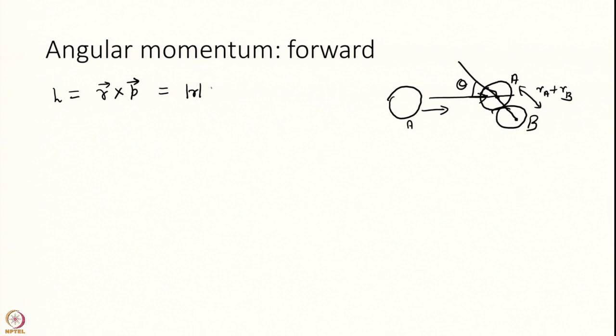This thing is nothing but magnitude of R magnitude of P into sine theta. Where theta is the angle between R and P and I am finding the angular momentum at the point of collision. R is RA plus RB. P is the reduced mass mu into U because U is the relative speed. You get the relative mass and at the reactant side it is mu_AB and let me call this as U_AB sine theta. So this is the forward angular momentum.